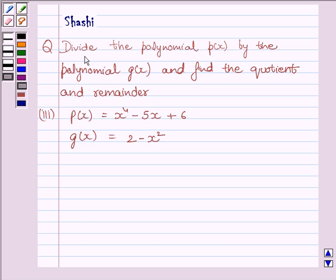Question is, divide the polynomial P(x) by the polynomial G(x) and find the quotient and remainder. Polynomial is x raised to the power 4 minus 5x plus 6. It is equal to P(x) and the other polynomial G(x) is equal to 2 minus x squared.